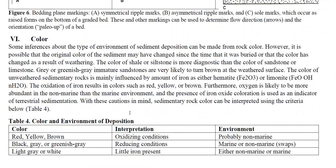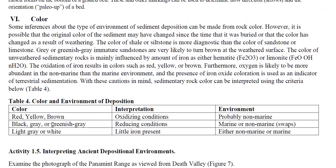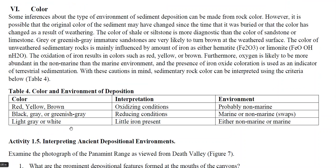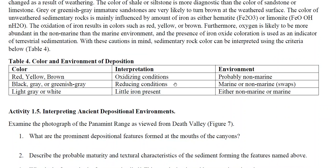This section covers color interpretation — when you see gray, greenish-gray, or black, that indicates reducing conditions, low oxygen. That's how we use color to tell whether the environment had oxidizing or reducing conditions.